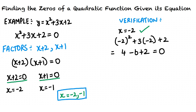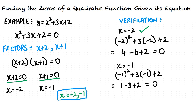That equals zero, so x equals negative 2 is indeed a zero of the quadratic function. Now let us plug in x equals negative 1: we get negative 1 squared plus 3 times negative 1 plus 2, which equals 1 minus 3 plus 2, which equals zero. Thus, x equals negative 1 is also a zero of the quadratic function.